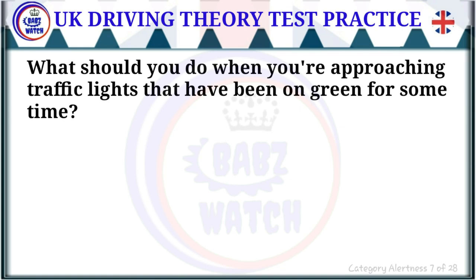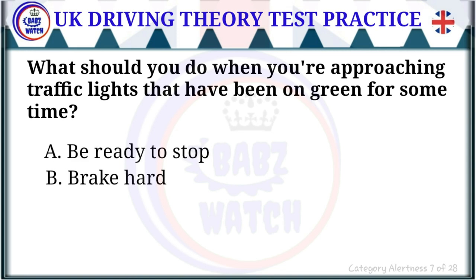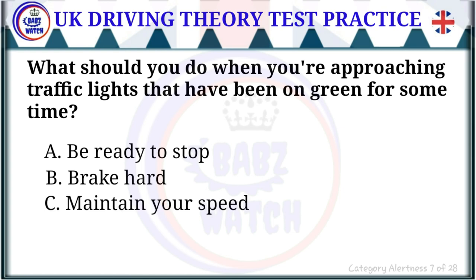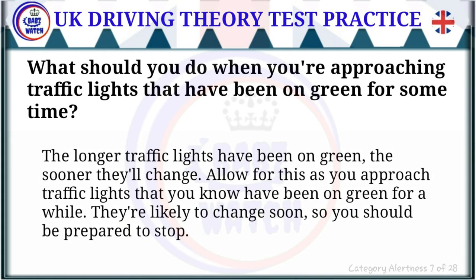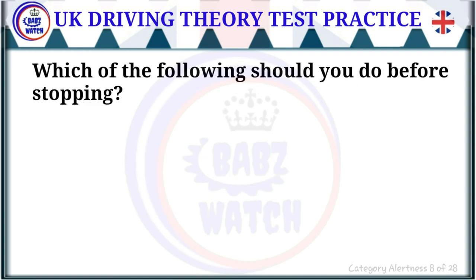Question 7 of 28: What should you do when approaching traffic lights that have been on green for some time? The correct answer is: be ready to stop. The longer traffic lights have been on green, the sooner they'll change. Allow for this as you approach — lights that have been on green for a while are likely to change soon, so be prepared to stop.